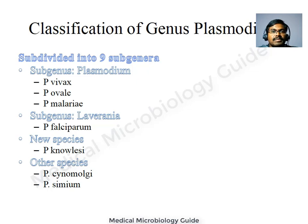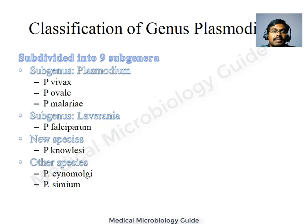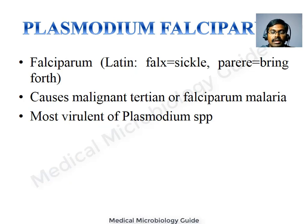The genus Plasmodium is subdivided into nine subgenera. Of human importance, the subgenus Plasmodium consists of P. vivax, P. ovale, and P. malariae. The subgenus Laverania consists of P. falciparum. A fifth species, Plasmodium knowlesi, has recently been added; it was infecting primates like macaques and has now been established as a human pathogen. Other primate species like P. cynomolgi and P. simium are also associated with human malaria.